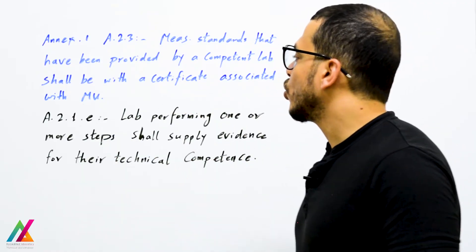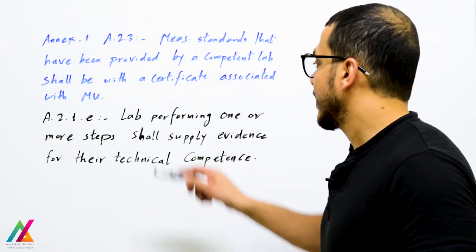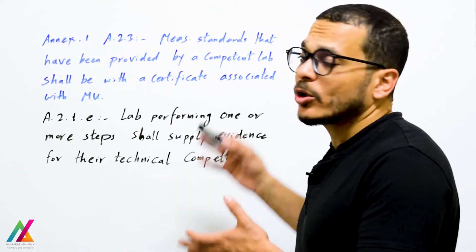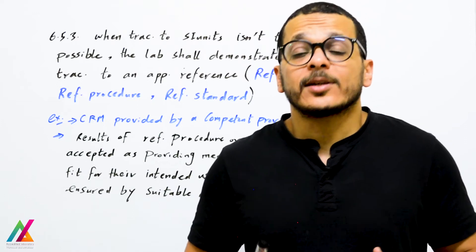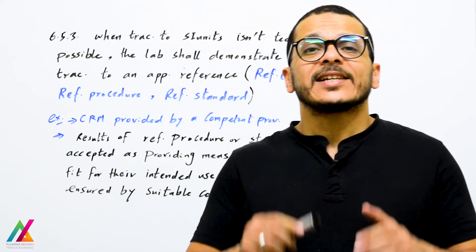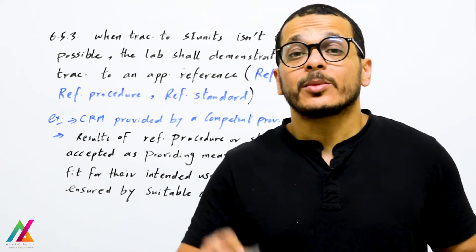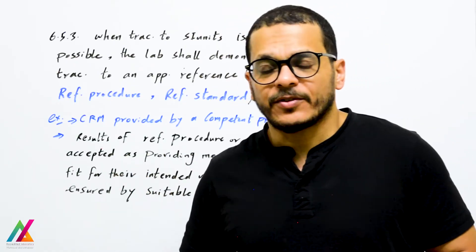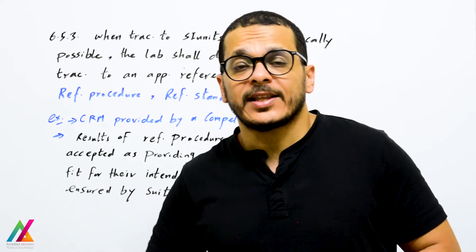There is a more flexible last point: when traceability to SI units is not technically possible, the lab shall ensure traceability of measurement results to an appropriate reference, such as a reference lab, a reference procedure, or a reference standard.